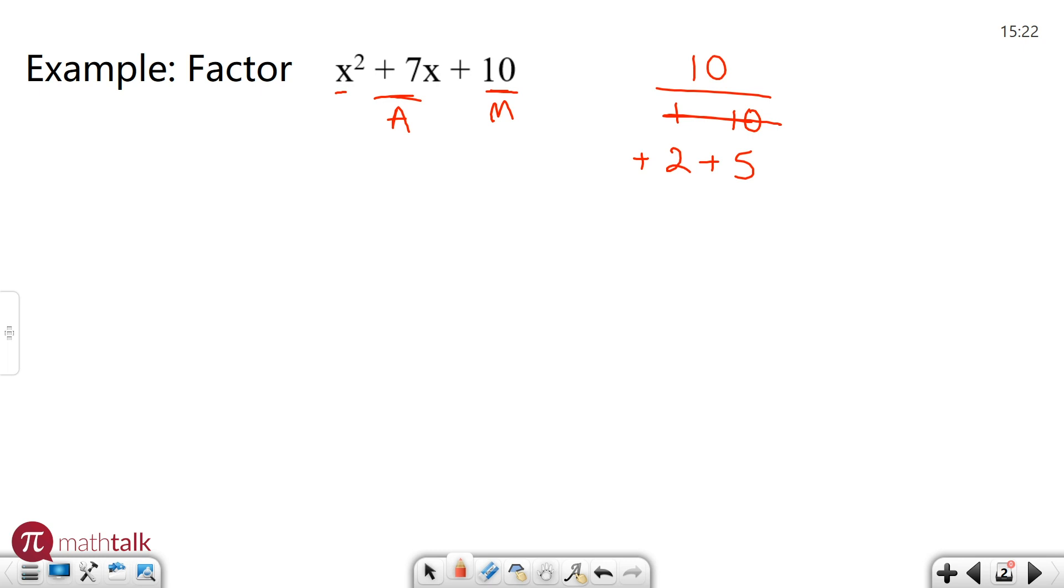And when you factor a polynomial you're going to have the same two binomials. It's going to be something like x plus or minus a number times x plus or minus a number. And so that plus or minus number that you're going to use are the two numbers that you found right here, plus 2 plus 5. And all I'm going to do is plug them right in, plus 2 plus 5, and this is the factored form of that polynomial. x plus 2 times x plus 5. So let's look at a couple more examples.